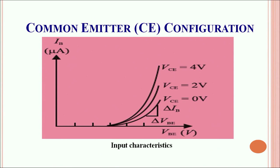This is the input characteristic curve of the common emitter configuration. Initially there is no rise in the value of the base current because there is a barrier potential. As soon as the barrier potential, which is around 0.6 volts, is attained, there is a sharp increase in the value of the base current with an increase in the base-emitter voltage. For different values of the collector-emitter voltage we see different curves, indicating different resistances of the circuit. The inverse of the slope — that is, ΔV_BE divided by ΔI_B — gives the resistance of the input circuit, which is usually of the order of 20 ohms to 100 ohms.